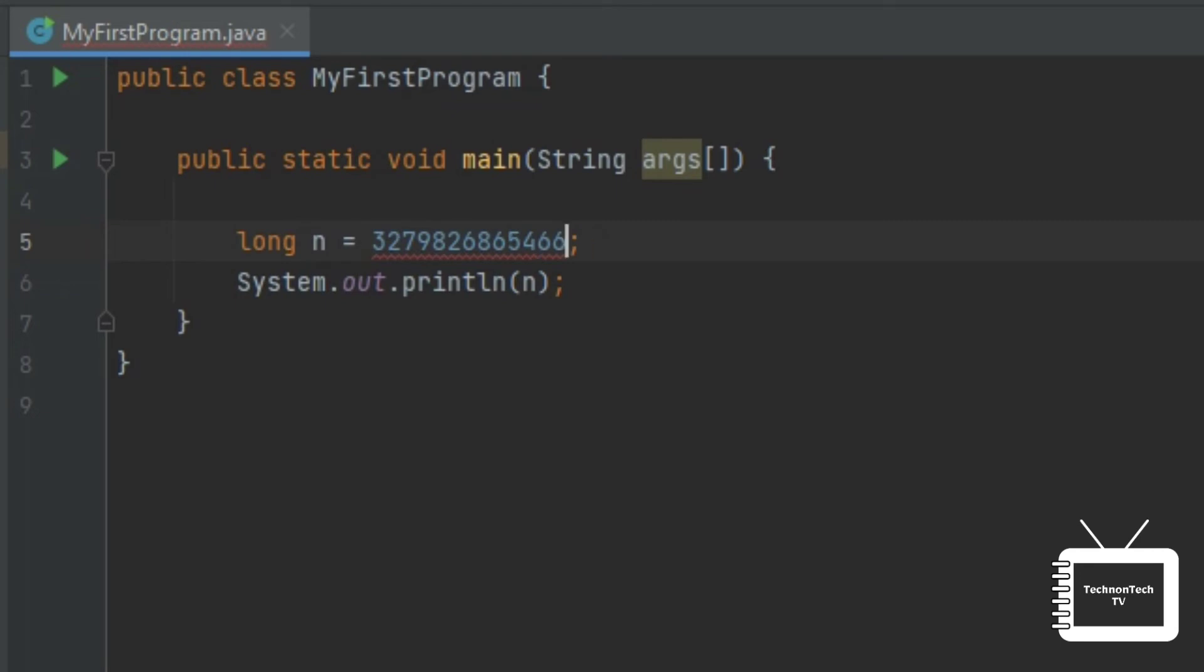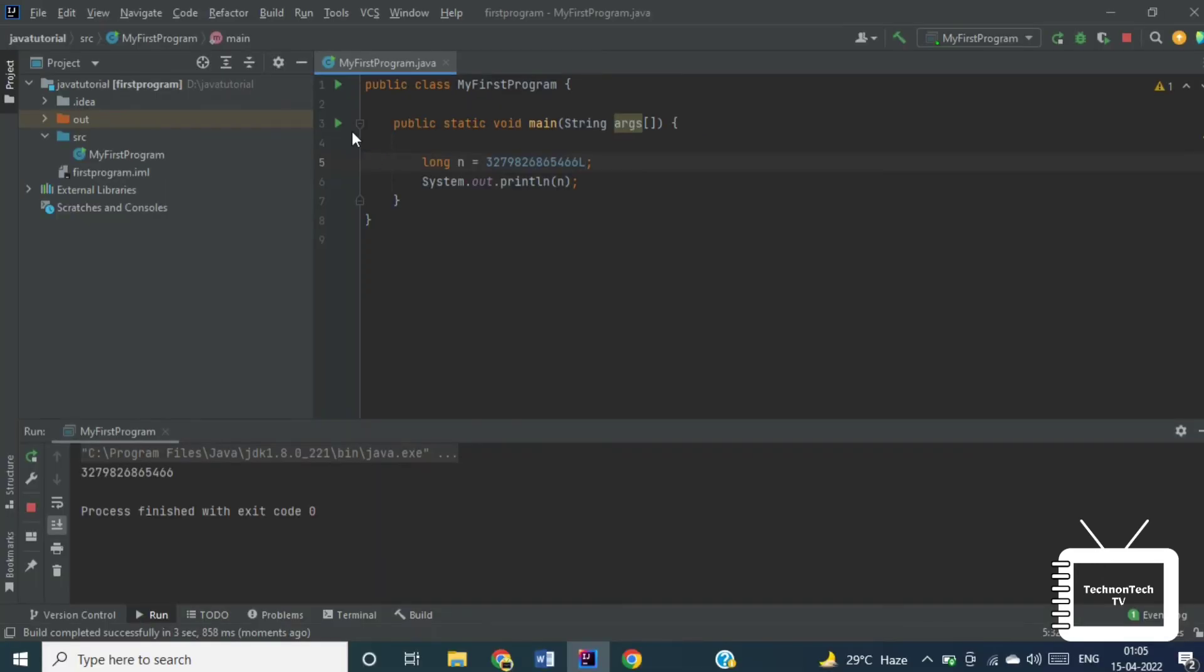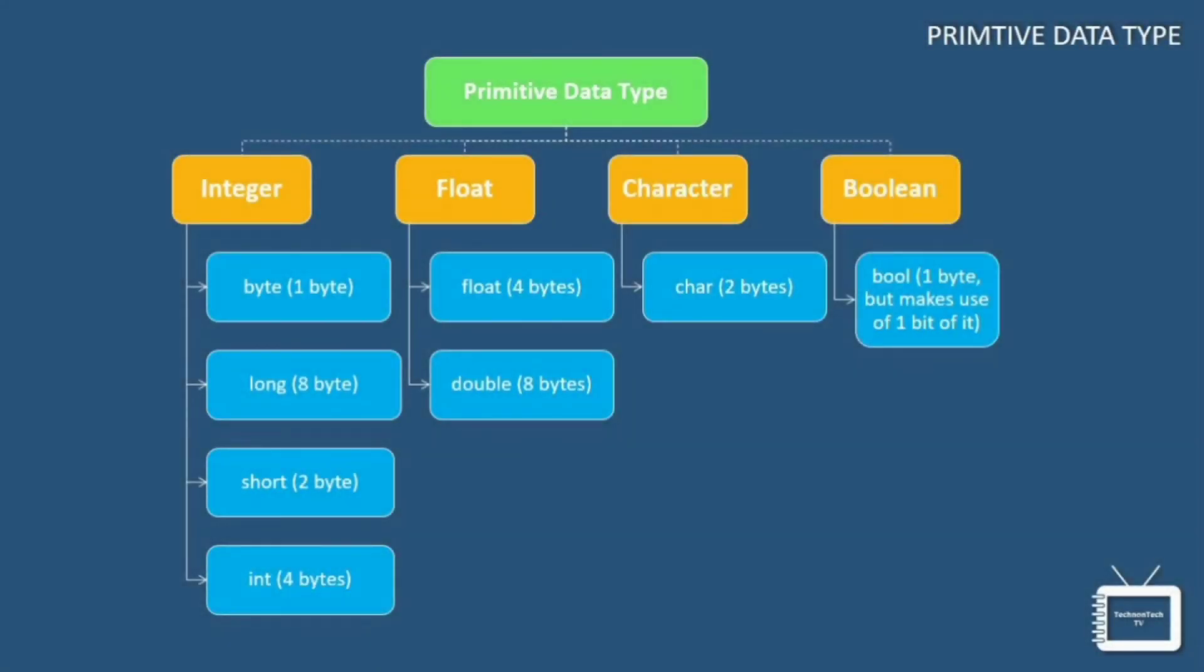Now let's see the example. So note that you should end the value with letter L. So if you don't write like this then you will get an error or you will see the warning. Now let's run the program. So here it will print the value present in n variable. So here we can see the output.